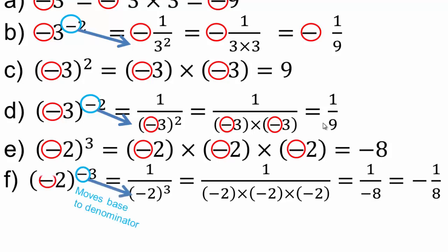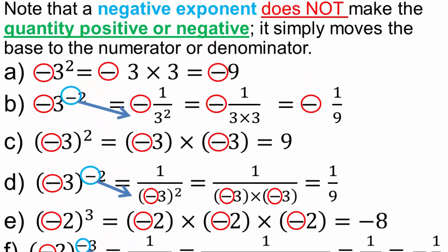That negative is moving the base to the denominator — this negative sign comes from the exponent. The negative sign of the exponent is making things go to the base and making it a positive exponent. The negative exponent is making things go to the denominator, whereas that negative sign is part of the base. So until you have base to the positive exponent, you cannot touch the positive or negative part — then you evaluate it.